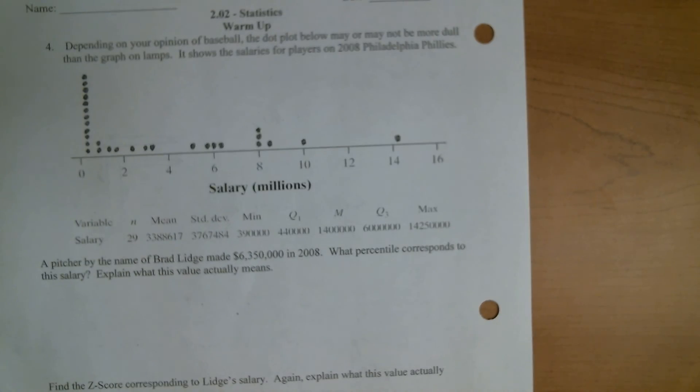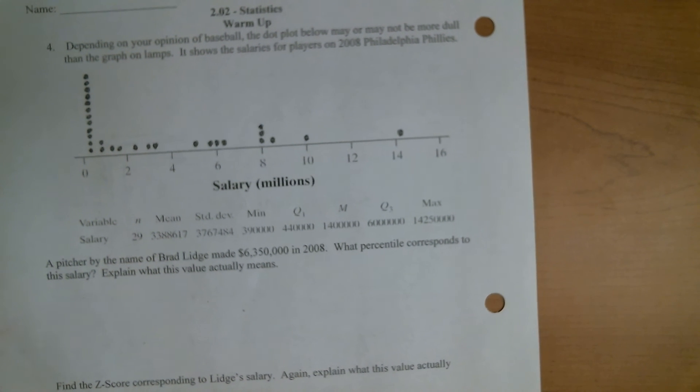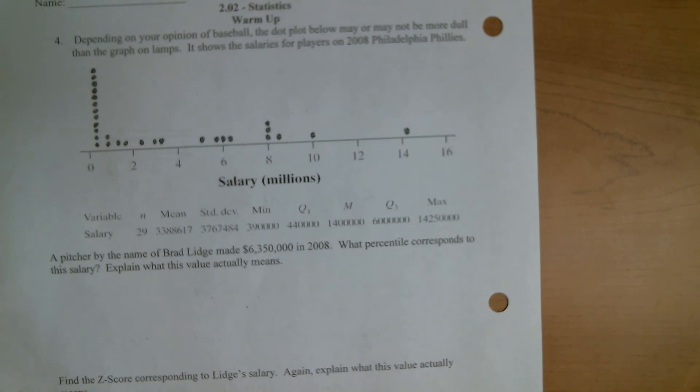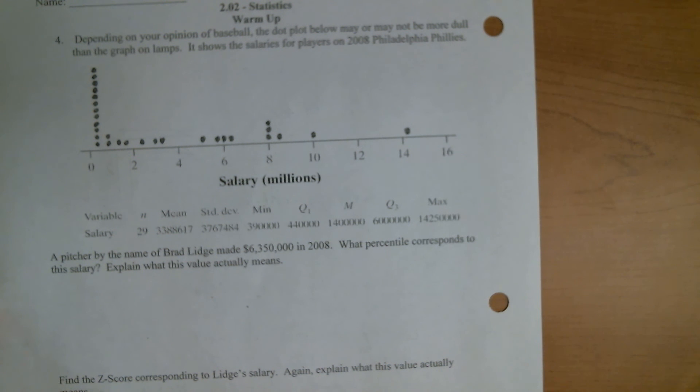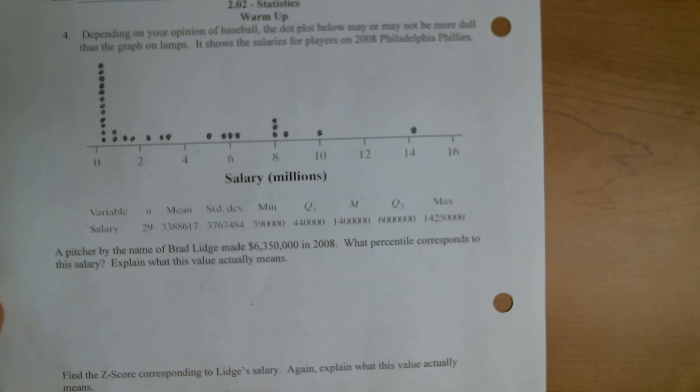Let's take a look at the back here. Depending on your opinion of baseball, the dot plot below may or may not be more dull than the graph on lamps. It shows salaries for players on the 2008 Phillies. So a pitcher by the name of Brad Lidge, who is now an announcer, made 6.35 million in 2008. What percentile corresponds to this salary? Explain what this value actually means.